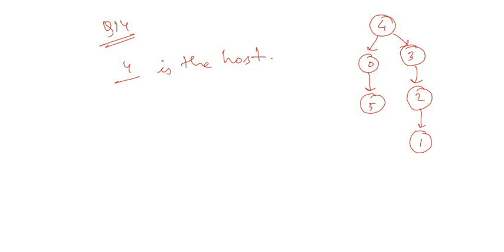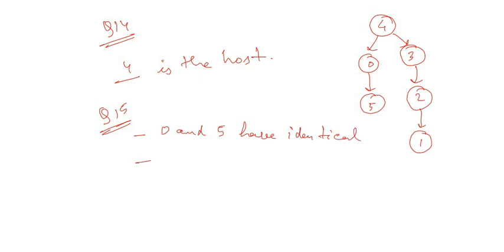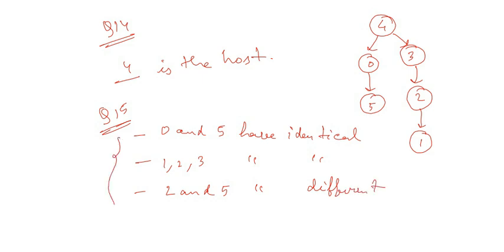For question number fifteen, the correct answers are: 0 and 5 have identical messages; 1, 2 and 3 have identical messages; 2 and 5 have different messages.